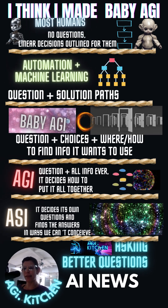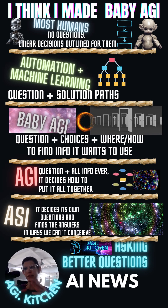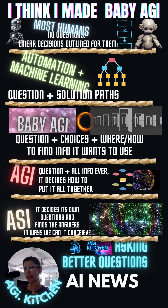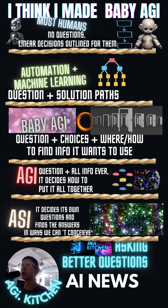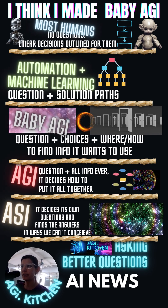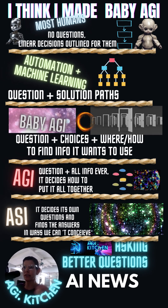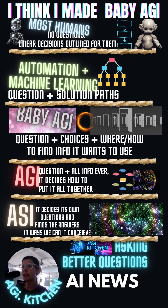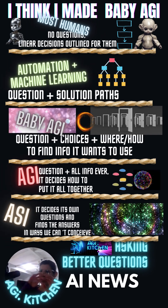Because I'm about helping business owners really understand the tech behind this, I'm going to use this comparison because I think it's the best way to get this point across. As humans, most people don't really ask questions and then they use linear decisions that are outlined for them to come to the end of the equation. In automation plus machine learning, we had questions and then we had solution paths with branches.